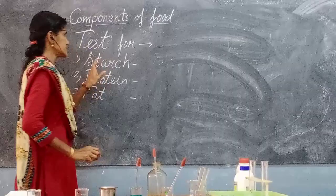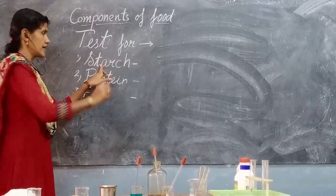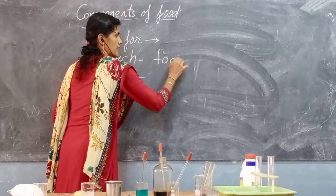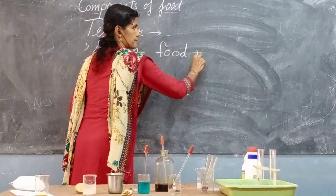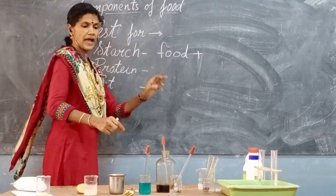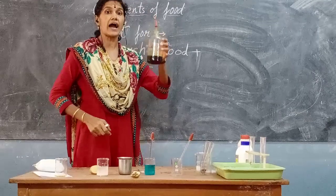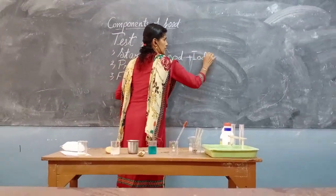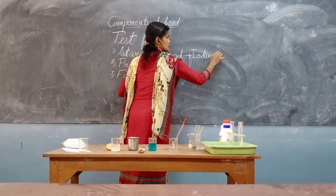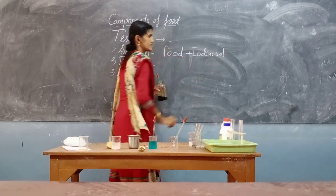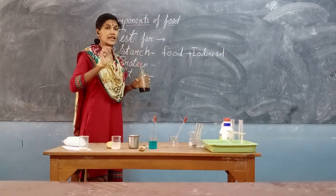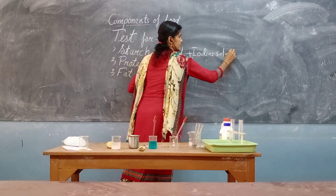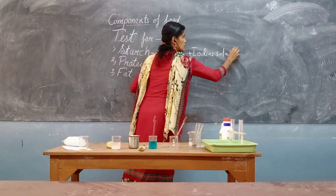That means starch — the food item — plus what we have added, this iodine solution. If we add this iodine solution, the food item becomes blue-black color. What is the color here? It is blue-black color.